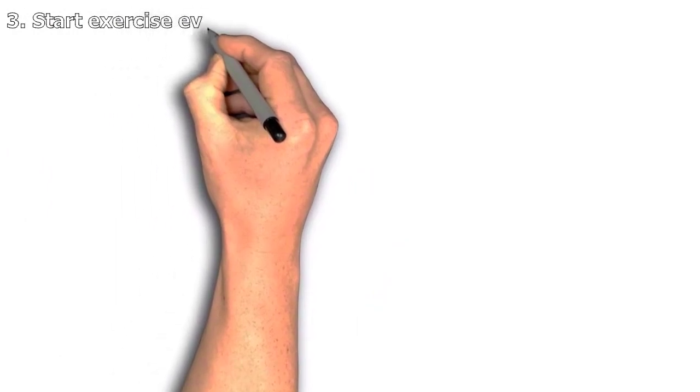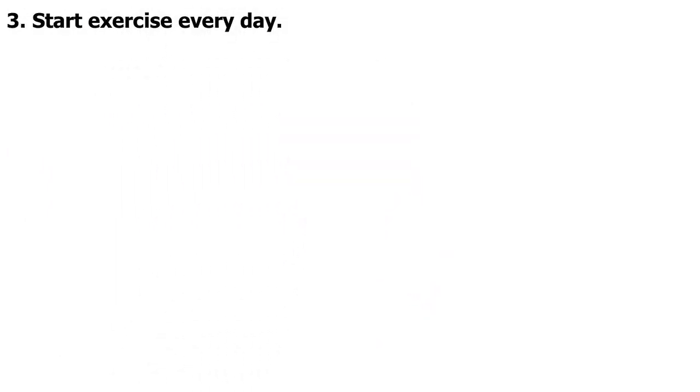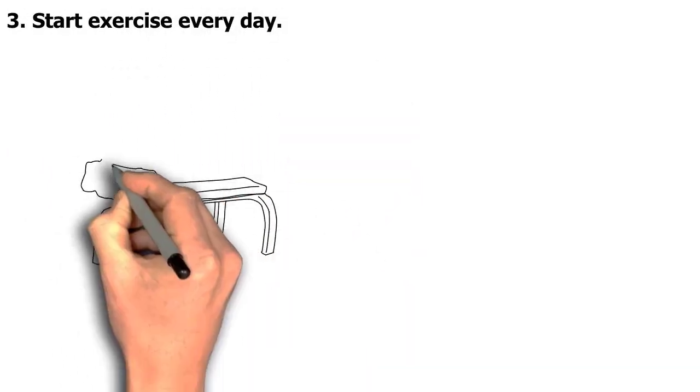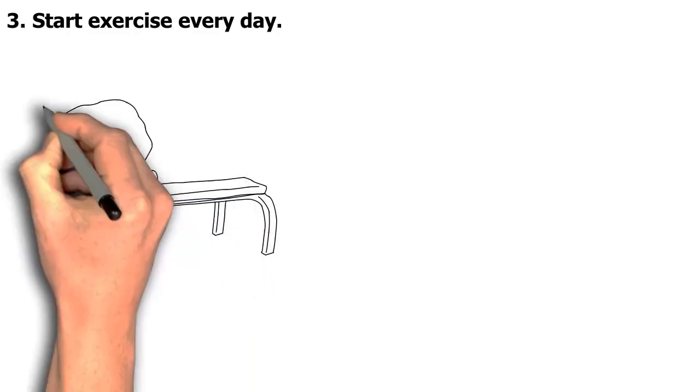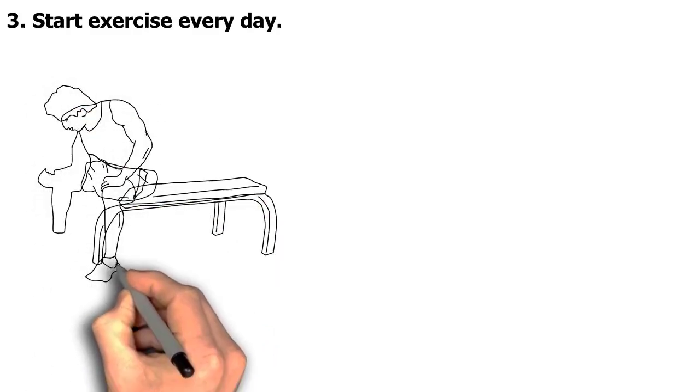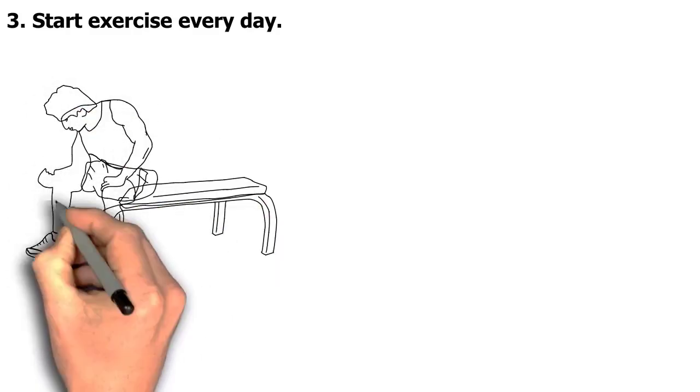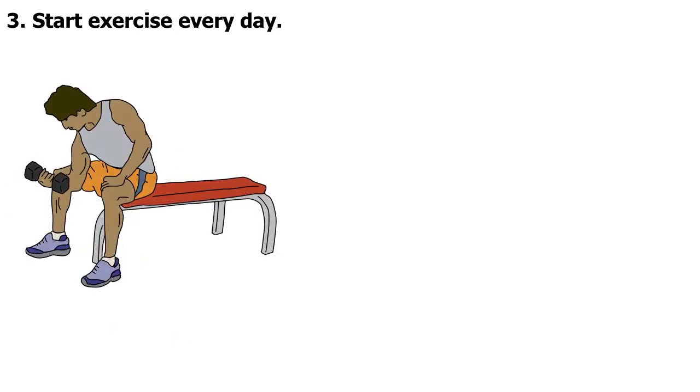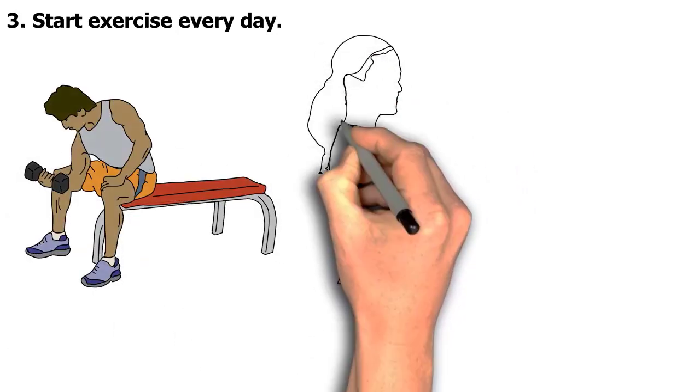3. Start Exercise Every Day. Numerous studies show a strong connection between physical exercise and brain function. When you're physically active, activity increases in your hippocampus, the part of your brain that promotes neuron growth.